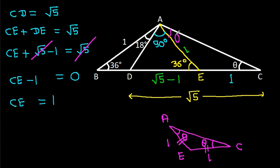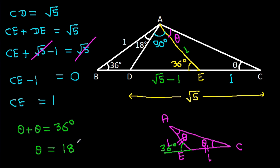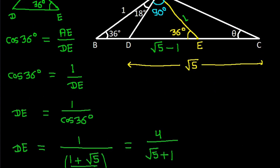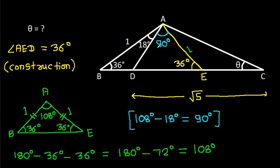This angle is theta so the other base angle is also theta. This exterior angle is 36 degrees. So theta plus theta equals 36 degrees, meaning theta equals 18 degrees. Therefore we get theta is 18 degrees.